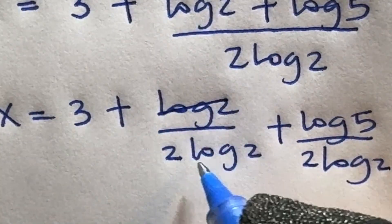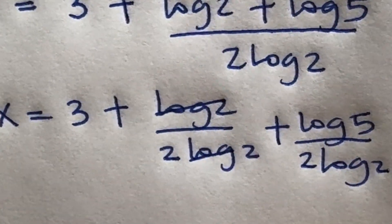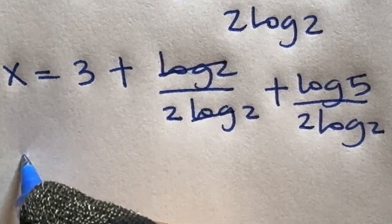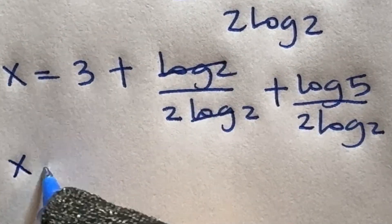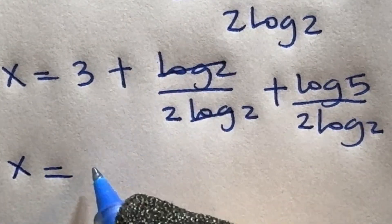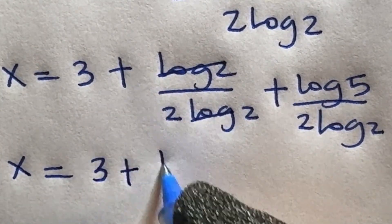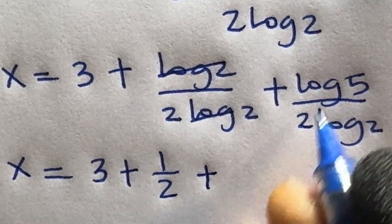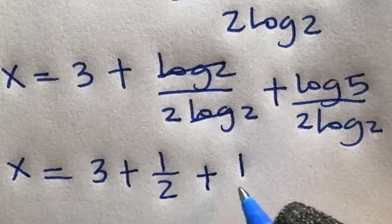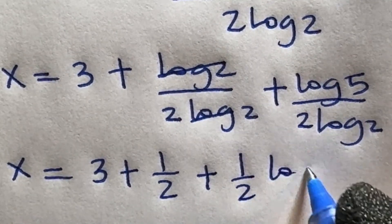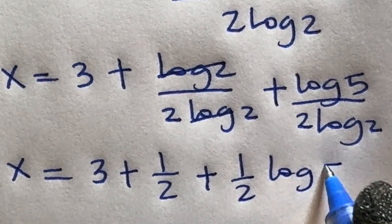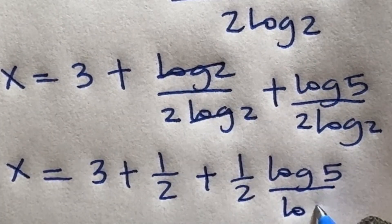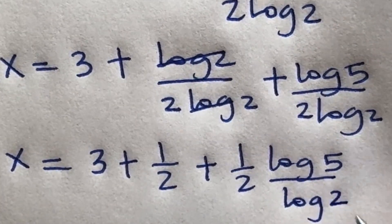Log 2 cancels with log 2, so what we are left with is x is equal to 3 plus 1 over 2, then plus 1 over 2 times log 5 divided by log 2.